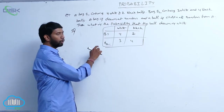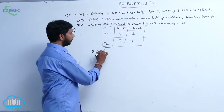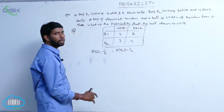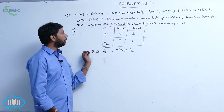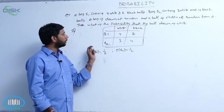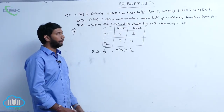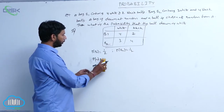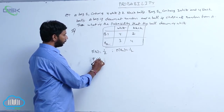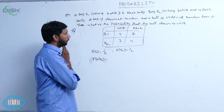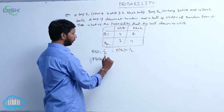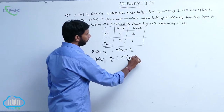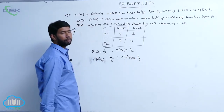P(B1) equals the probability of selecting bag 1, which is 1/2, and the probability of the second bag P(B2) is also 1/2, since there are 2 bags. The probability of drawing a white ball from the first bag, P(W|B1), equals 4/6, as there are 4 white balls out of 6 total. And P(W|B2) equals 3/7, the white balls from the second box.